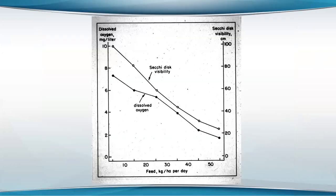This is an old slide we did years ago. Along the x-axis we've got the feed input per day up to 50 kilograms per hectare per day. On the y-axis we've got the dissolved oxygen concentration in the early morning and the Secchi disc visibility. As the feeding rate increases, generally the Secchi disc visibility decreases, and the dissolved oxygen concentration also decreases.